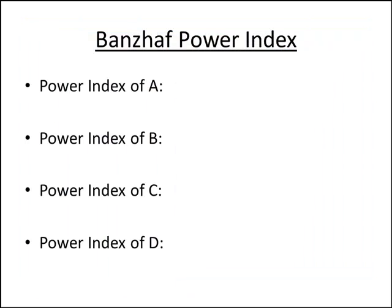Now we're ready to figure out the power index. Counting up the critical voter appearances in the table: there were ten A's, six B's, six C's, and two D's. The power index is a fraction where the denominator is the total of all these numbers: 10+6+6+2 = 24. So we divide each number by 24, and that gives us the Banzhaf Power Indices for each voter.